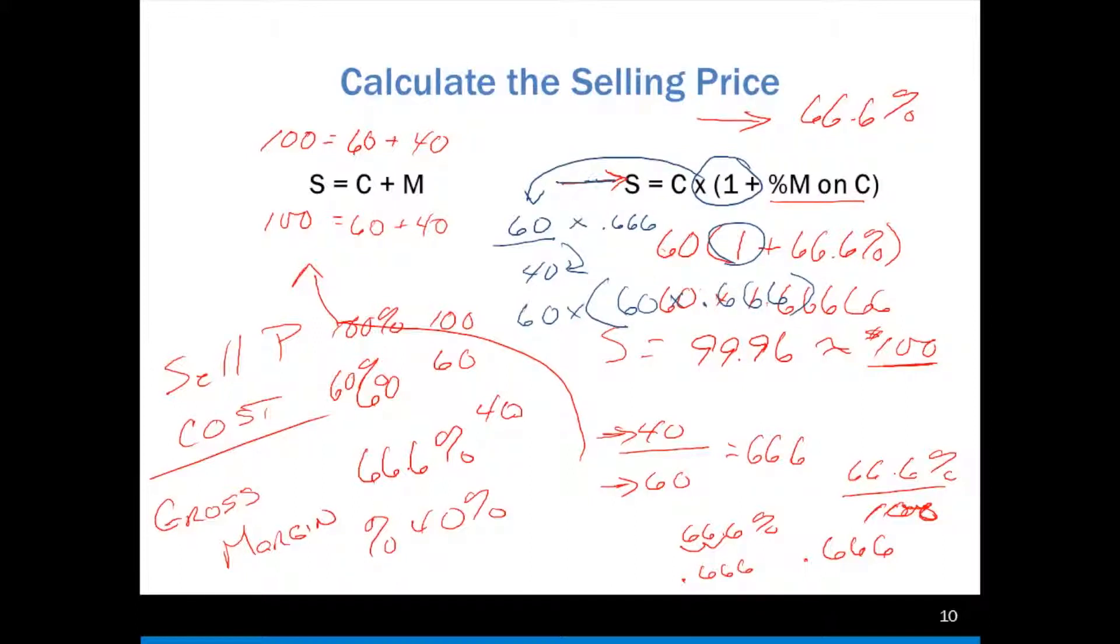I need to understand that this 1 represents my initial cost. If I take 60 times 1, 60 times 0.666, then I end up with the right relationship. In other words, I've taken the 60 plus 66% more of it, the 60 plus the additional 40 by utilizing the 1 in the formula.